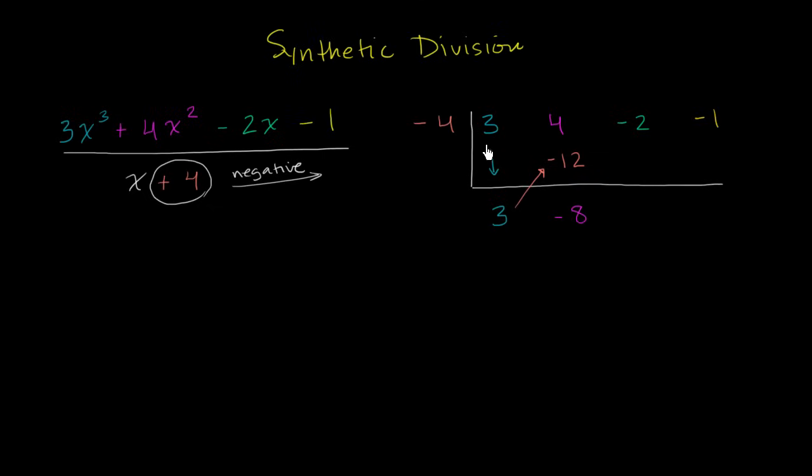Then you multiply negative 8 times the negative 4. I think you see the pattern. Negative 8 times negative 4 is positive 32. Now we add negative 2 plus positive 32. That gives us positive 30. Then you multiply the positive 30 times the negative 4. And that gives you negative 120. And then you add the negative 1 plus the negative 120. And you end up with a negative 121.